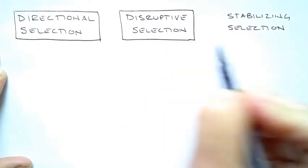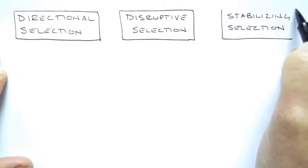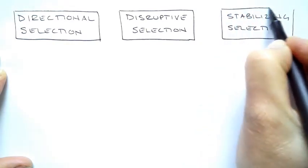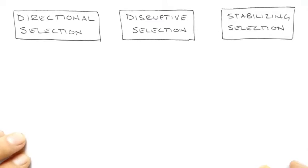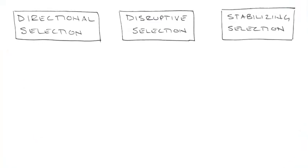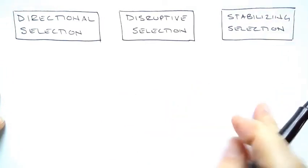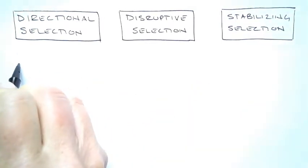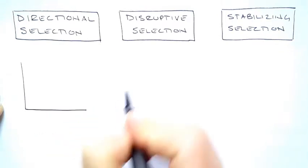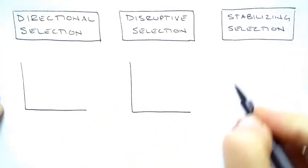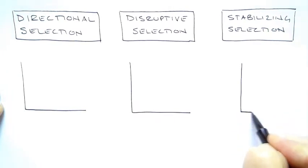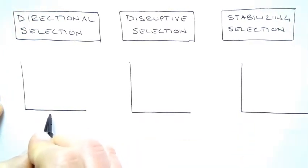And the last one is called stabilizing because it becomes more stable and narrow. So those are the three types of selection. Throughout the video feel free to pause it to take notes and to catch up. I'm going to be drawing three graphs underneath each one of these, just drawing my x and y axis. The labels are the same for all of these. So in the middle is what we call the norm or the average.